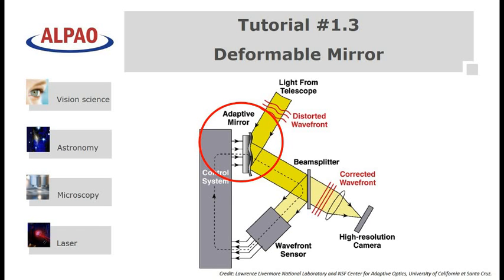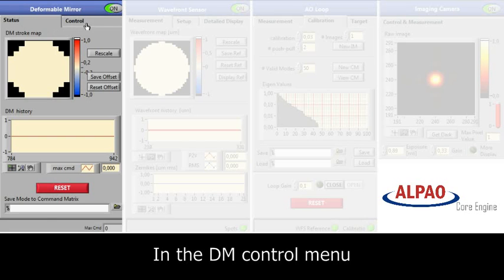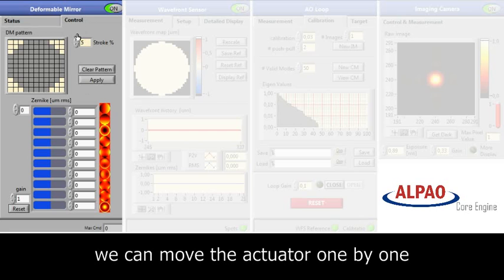Next we will look at the control of the deformable mirror, which is controlled by the first tab in the graphical interface.